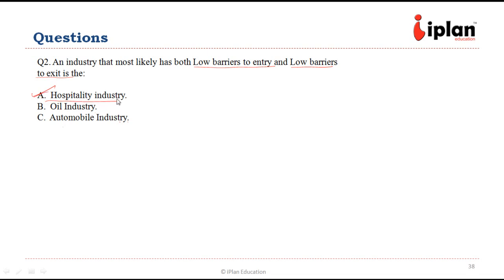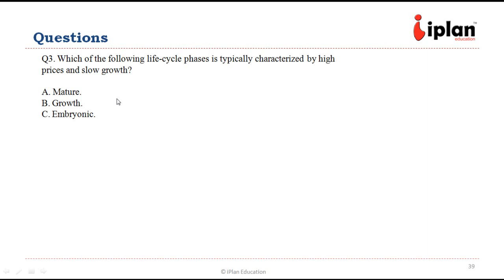For the hospitality industry, the entry barriers and exit barriers are not that high, so A is the right answer. Moving to question number three: which of the industry life cycle phases is typically characterized by high prices and slow growth? In the first phase, growth is very slow and prices are higher.